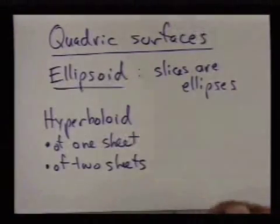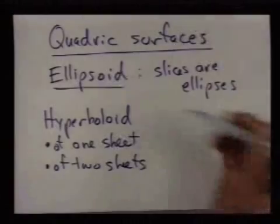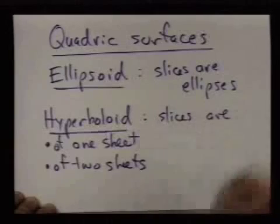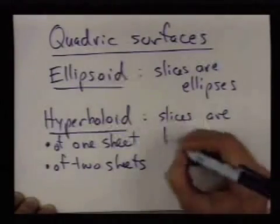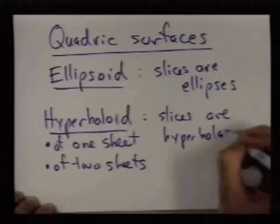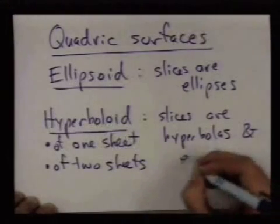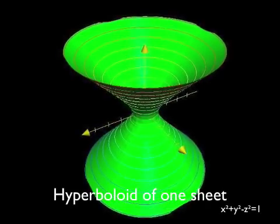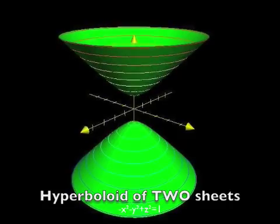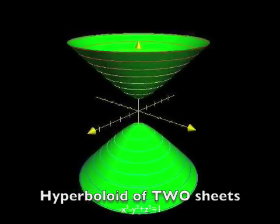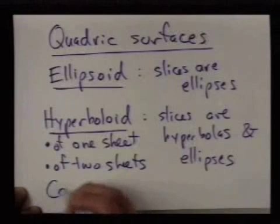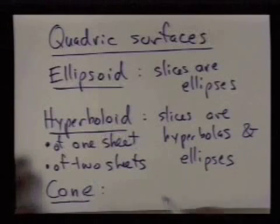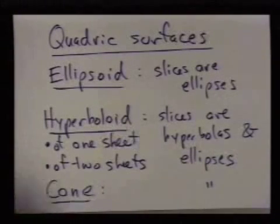A hyperboloid of one sheet is what a nuclear reactor looks like — your book tells you that. Its slices are going to be hyperbolas and ellipses. And yet another quadric surface is the cone, and the slices of this are also hyperbolas and ellipses.